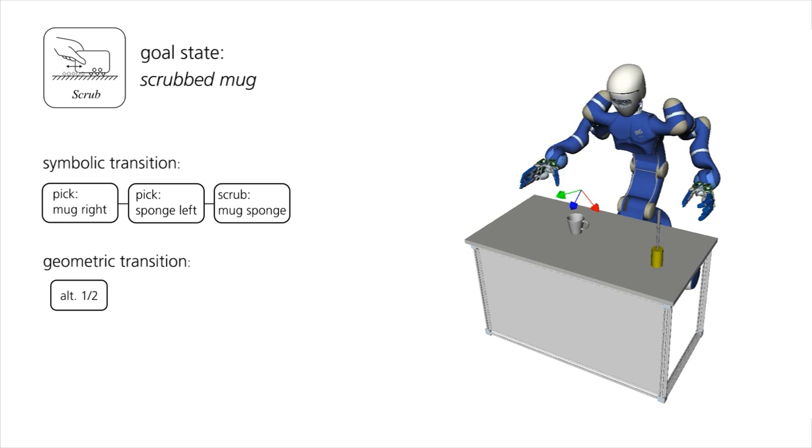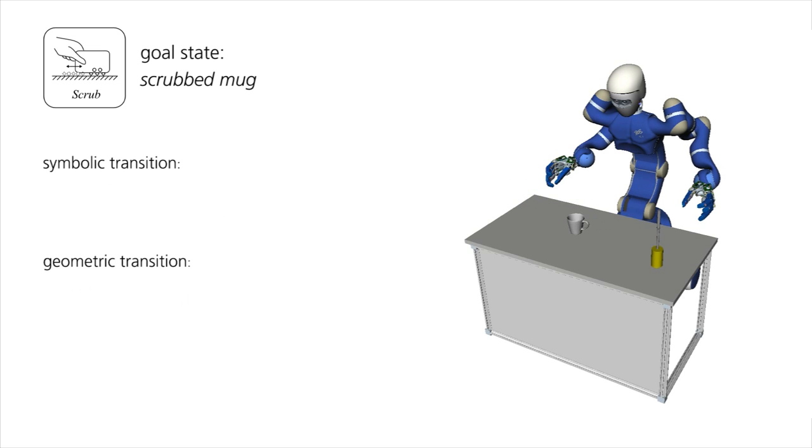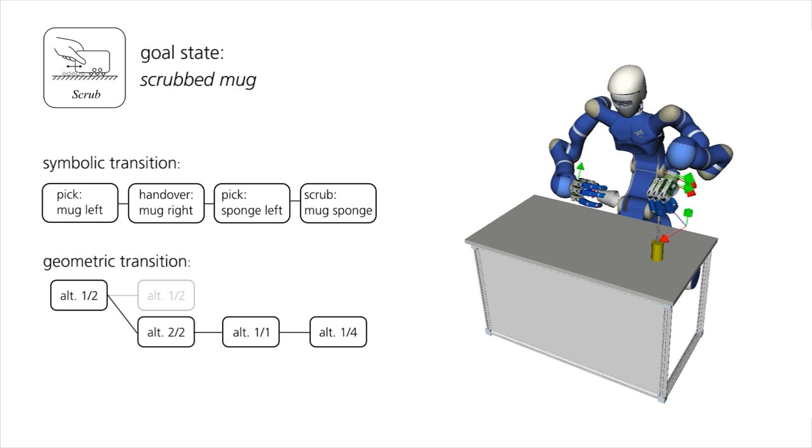In case of failure, the robot considers alternative solutions. For example, grasping a mug at the bottom is the only way to clean it. If this is not directly achievable, the robot may decide to schedule a handover action in order to turn the mug.